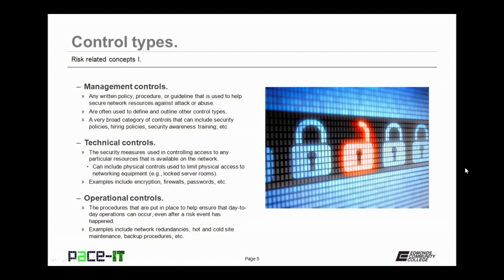Then there are technical controls. These are security measures that are used in controlling access to any particular resource available on the network. Technical controls can include physical controls used to limit physical access to networking equipment, such as locked server room doors, as well as encryption, firewalls, passwords, etc.